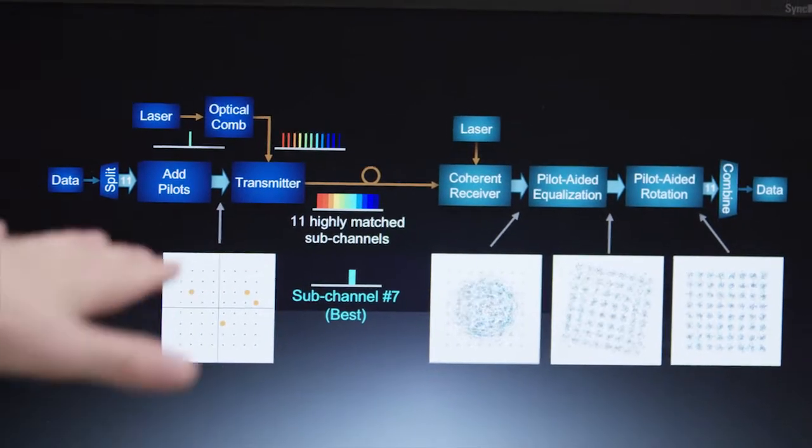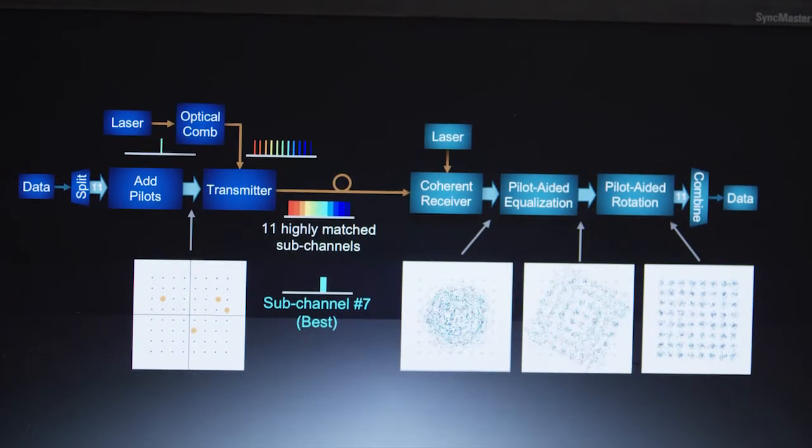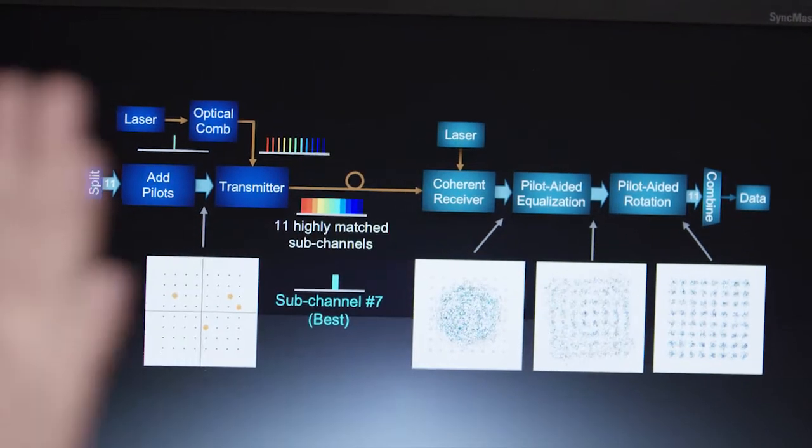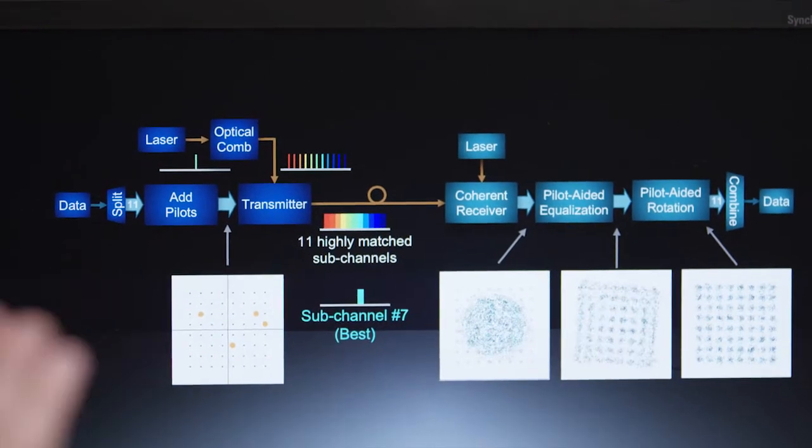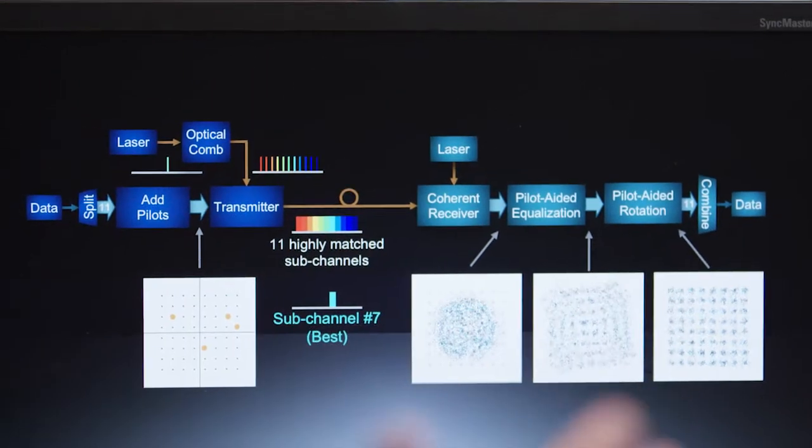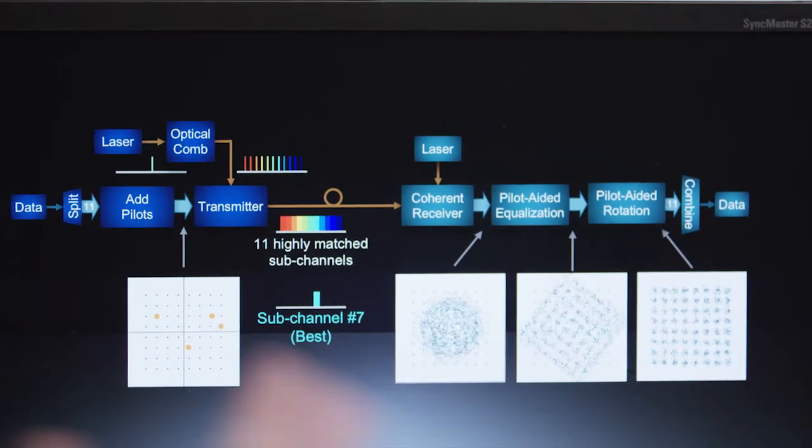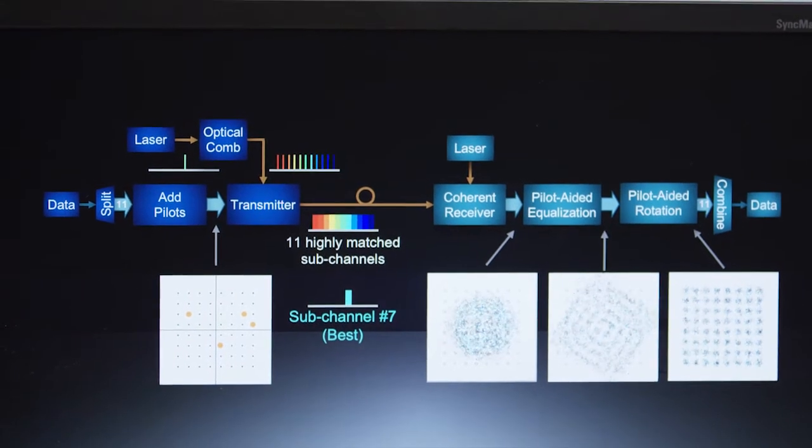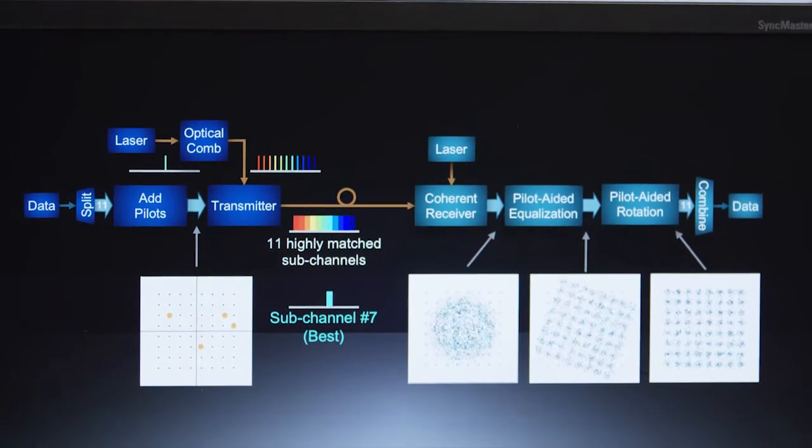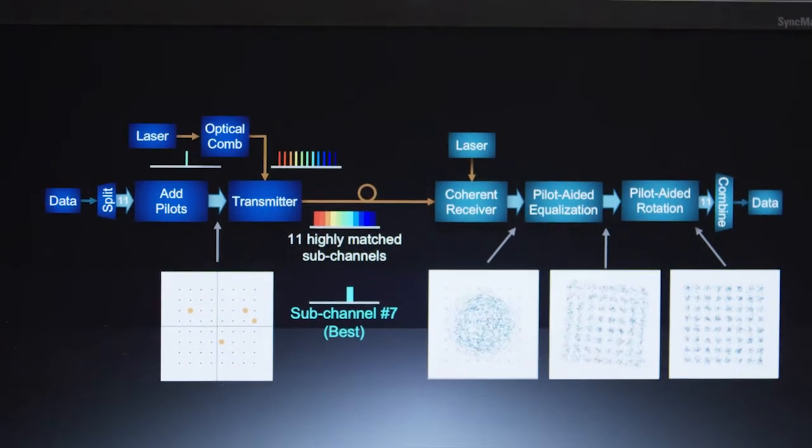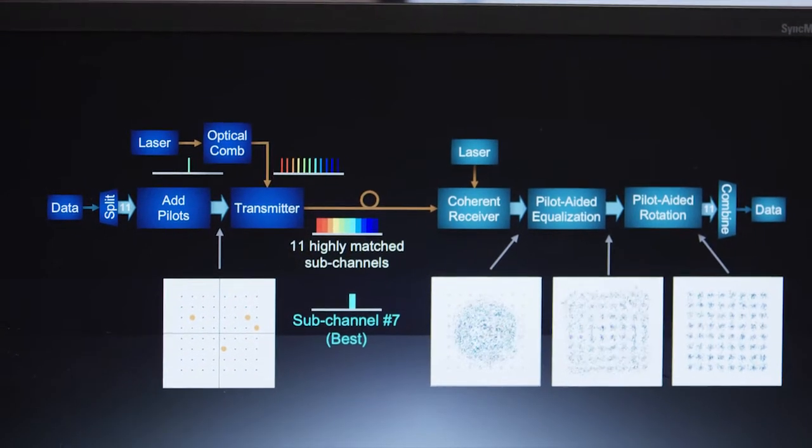So when we modulate them with the modulator, we find that we have, as we see in this schematic, 11 sub-channels with almost no gap between them. So because we have no gaps, we're essentially wasting very little bandwidth. So we're very efficient in terms of bandwidth.